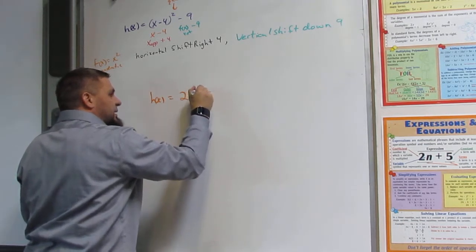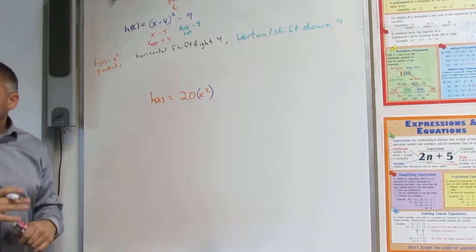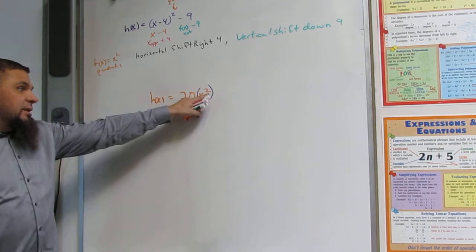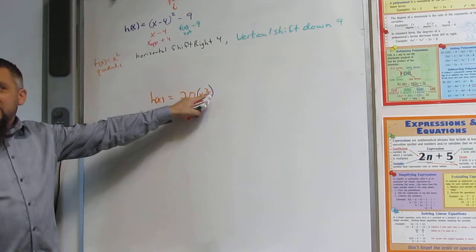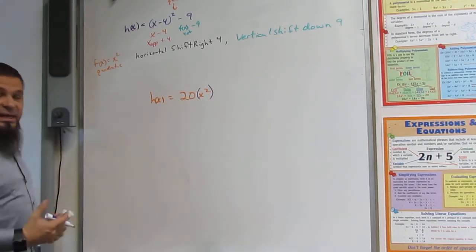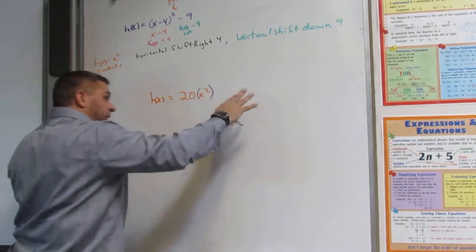...because technically the parentheses would be here, right? Because the exponent directly affects what it's next to. Right? So that's x. So it's to the whole function.